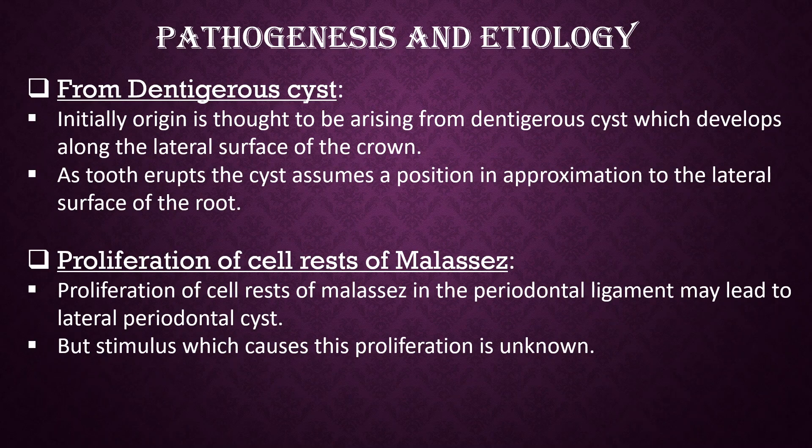Pathogenesis and Etiology: From Dentigerous Cyst. Initially, the origin is thought to be arising from a dentigerous cyst, which develops along the lateral surface of the crown. As the tooth erupts, the cyst assumes a position in approximation to the lateral surface of the root.